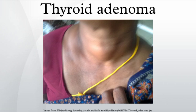Histopathologically, follicular adenomas can be classified according to their cellular architecture and relative amounts of cellularity and colloid into the following types. Fetal: These have the potential for microinvasion, and consist of small, closely packed follicles lined with epithelium.